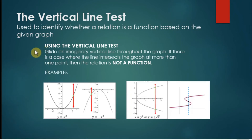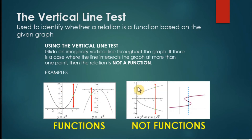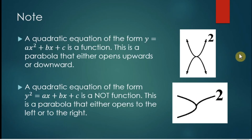We have a concept called the vertical line test, used to identify whether a particular graph represents a function. We glide an imaginary vertical line throughout the graph. If there is a case where the line intersects the graph at more than one point, then the relation is not a function. For example, the parabola opening upward or downward passes this test — the vertical line meets the graph at only one point. But for other graphs, the vertical line can touch at two or even three points, meaning those are not functions.